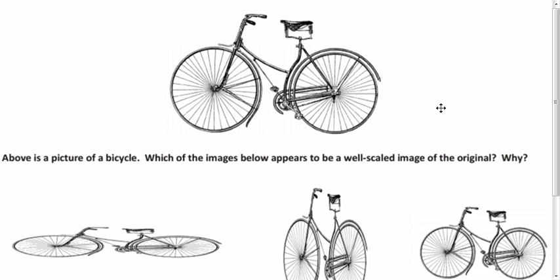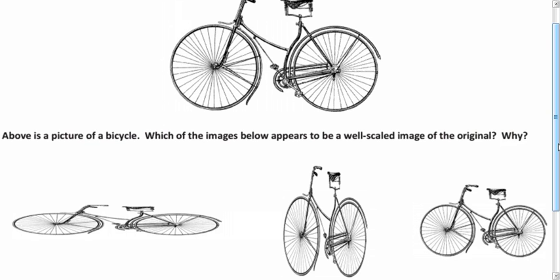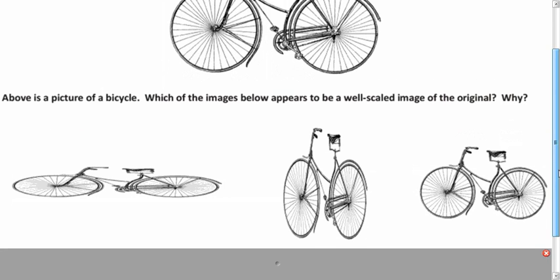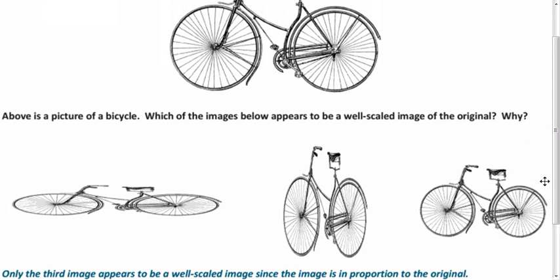Here is a bicycle. Which of these is a well-scaled image of the original and why? Well, it looks like the third one is the well-scaled one because it's in proportion to the original. Proportion is important. The other ones, the first one looks like it's been squished vertically. This one looks like it's been squished horizontally. This one, however, the wheels still look like circles and it's in a nice proportion.